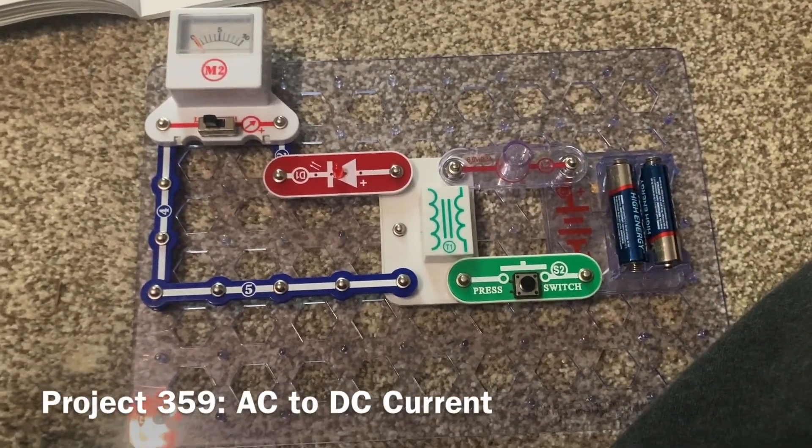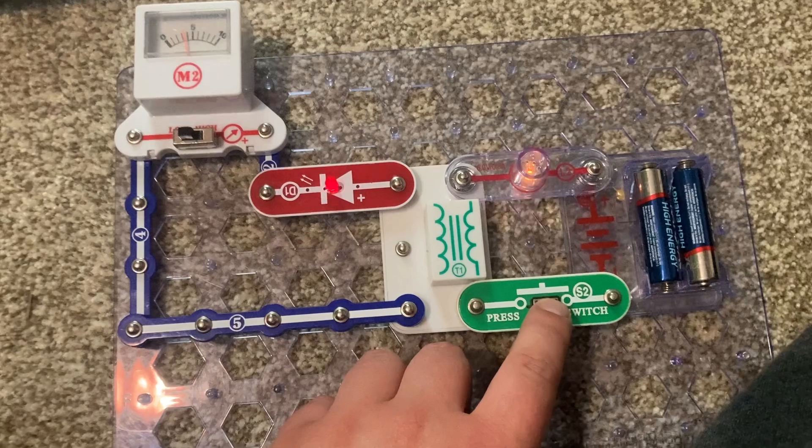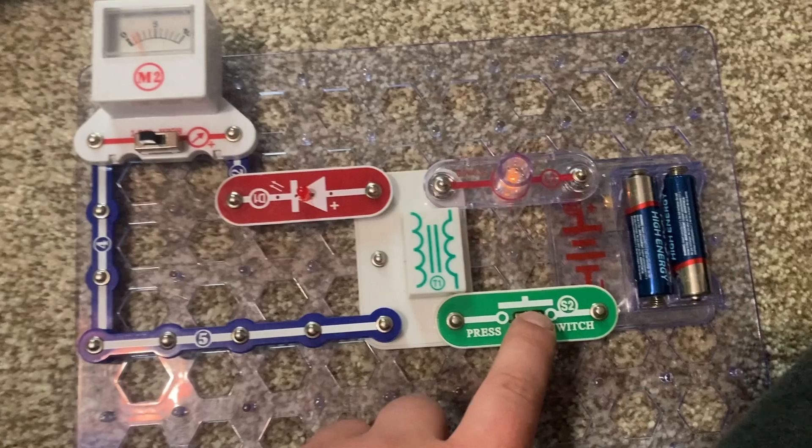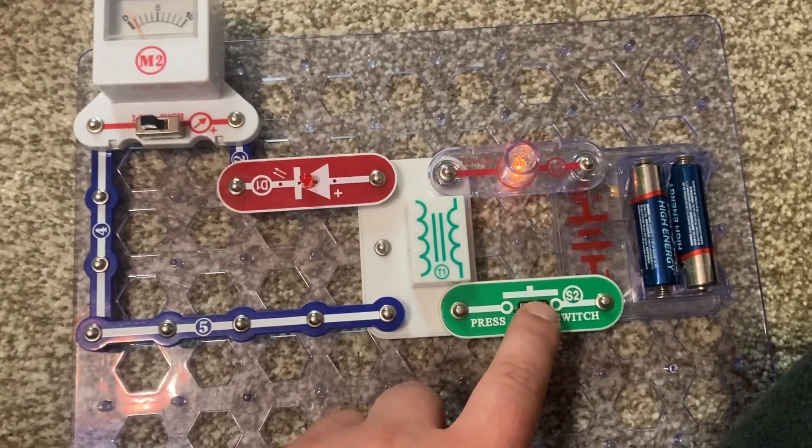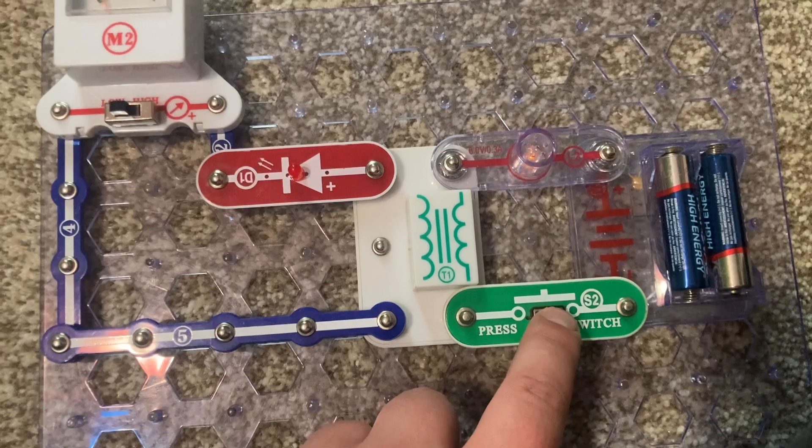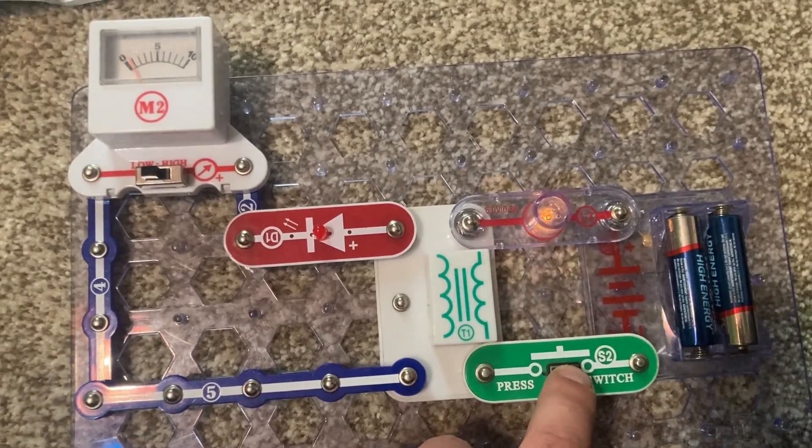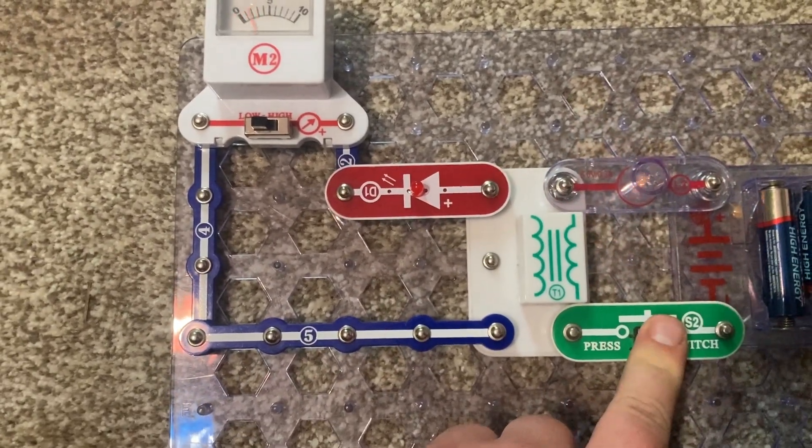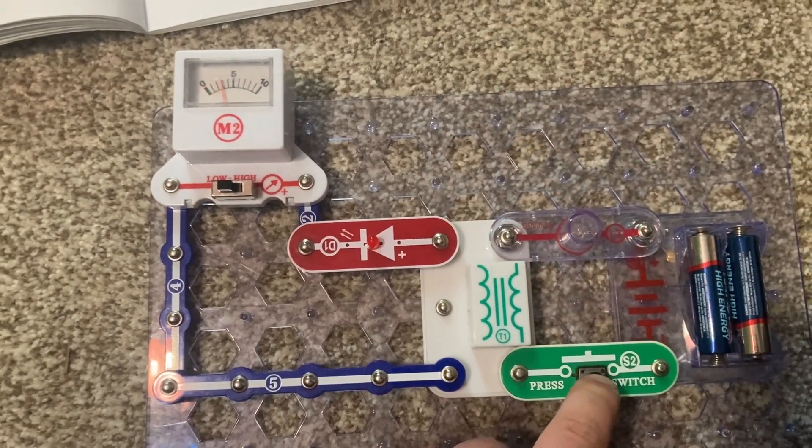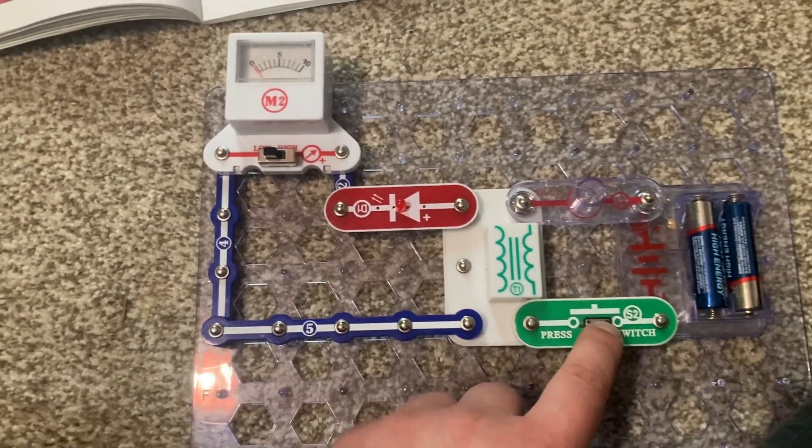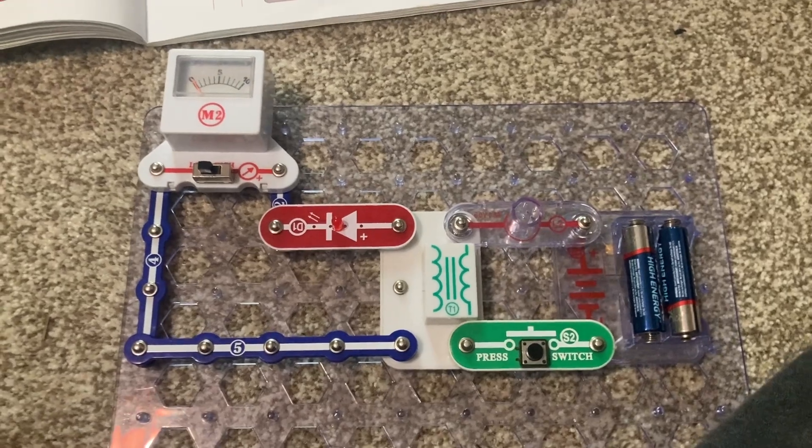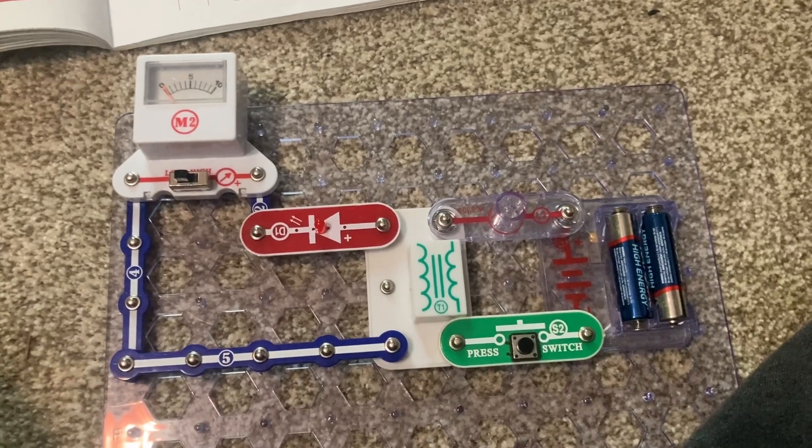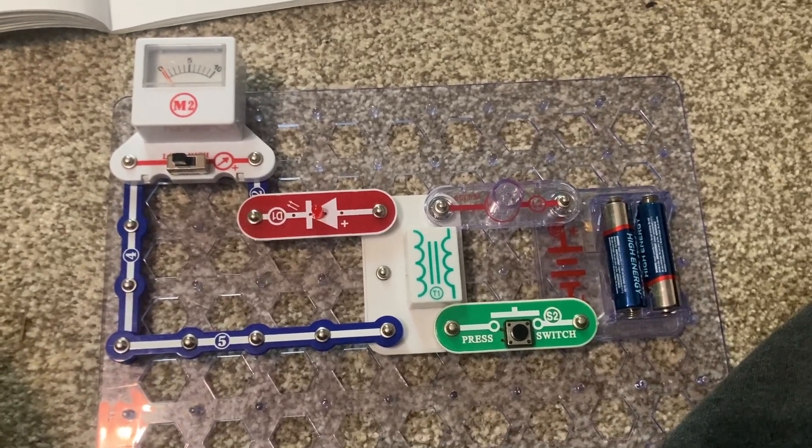This project has a similar principle to number 343 in that it shows an alternating current being converted to a direct current. Pushing and releasing the press switch continuously as what I am doing produces an AC current. And then the LED converts it to a DC current since electricity can only flow through it in one direction. And the meter will only deflect to the right. Without the LED the meter will deflect in both directions. In real life applications, inverters are often used to convert one type of current to another, especially AC to DC power.